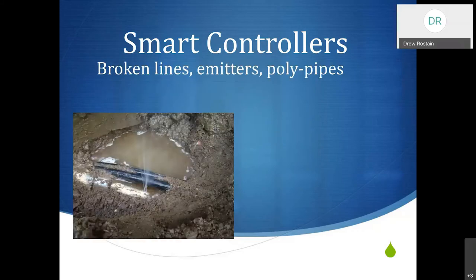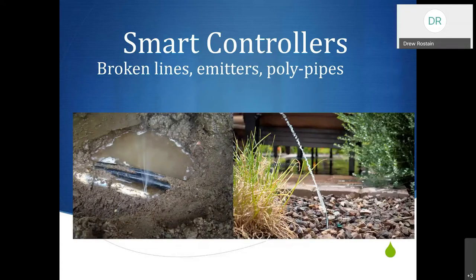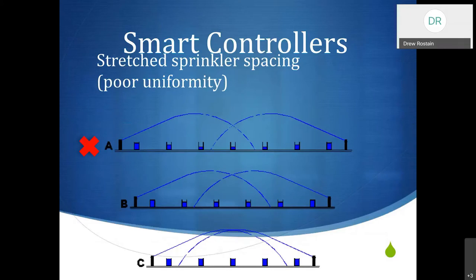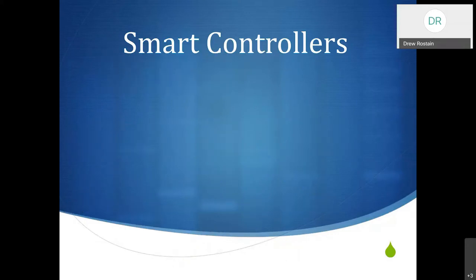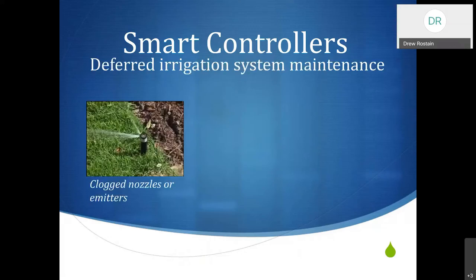Some important things that smart controllers will NOT do: if you have broken drip lines or missing emitters on poly tubing, the smart controller is not going to know that this is happening. It won't be able to fix or compensate for it. If you have stretch sprinkler spacing or bad uniformity where your coverage is not very good, the smart controller is not going to be able to compensate for that either. If you have clogged nozzles or drip emitters, the smart controller cannot compensate for that.